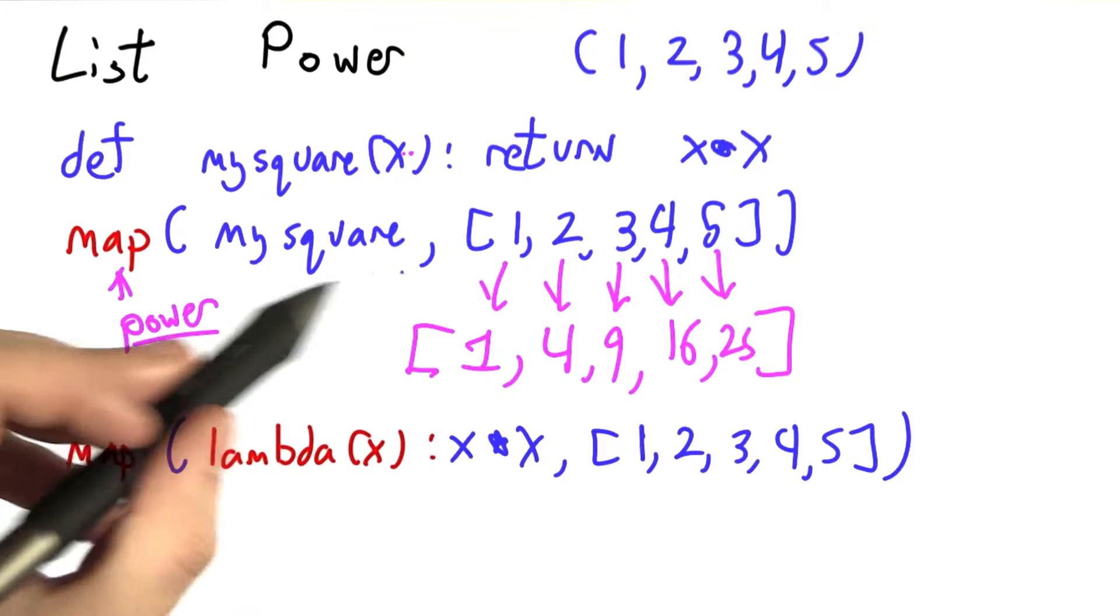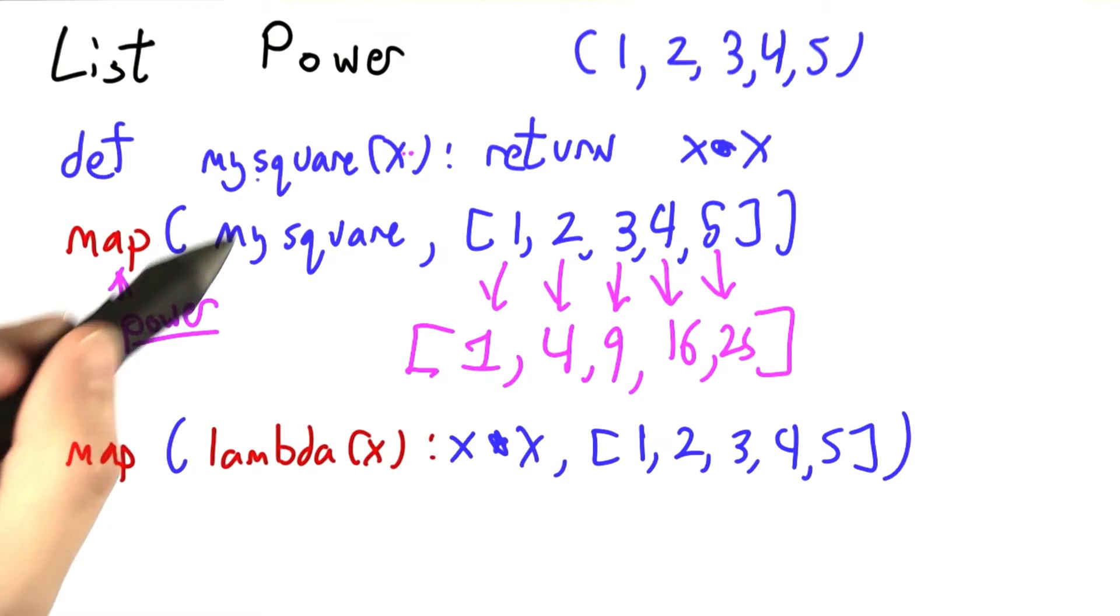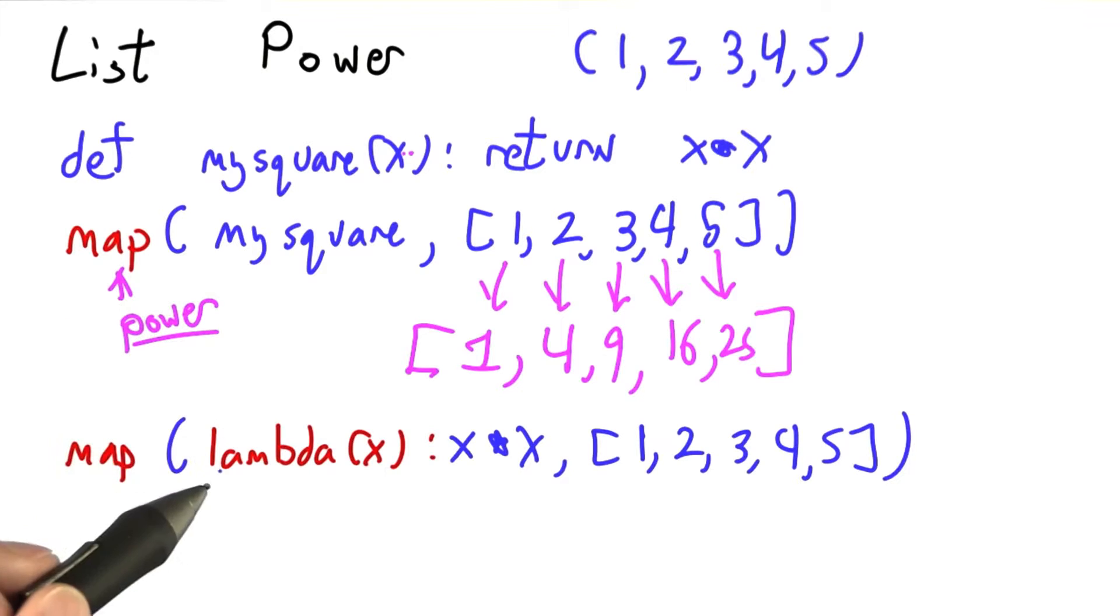I said that map takes a function as its first argument. One way to make a function is to define it earlier and refer to it by name, but we can also make a function right now, right in this expression when we need it, and pass that in.